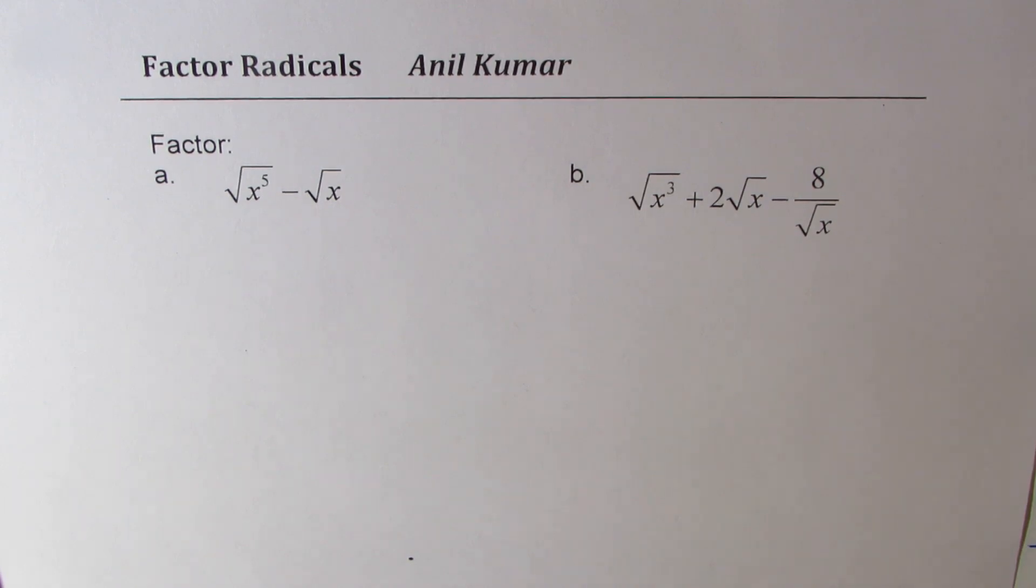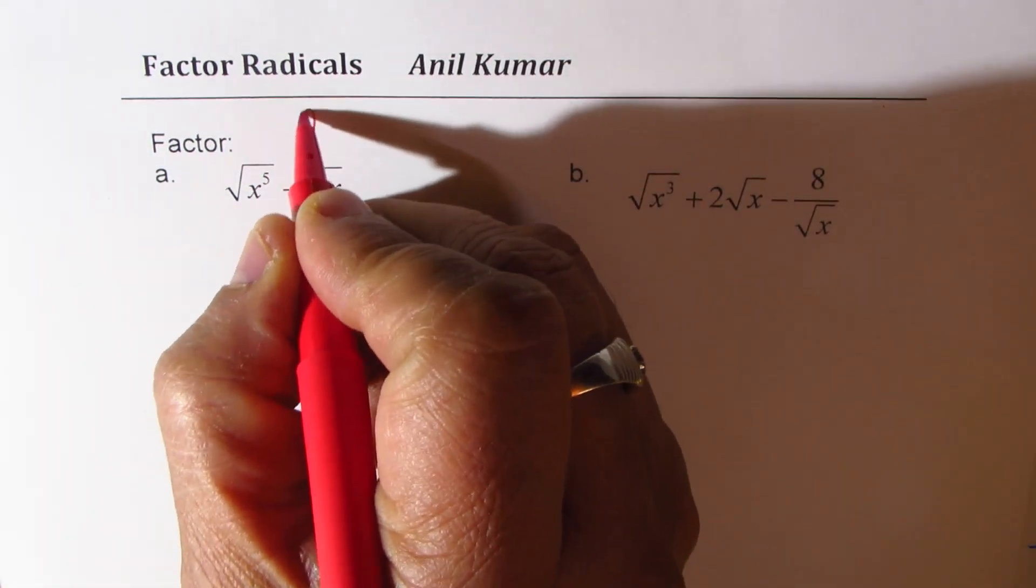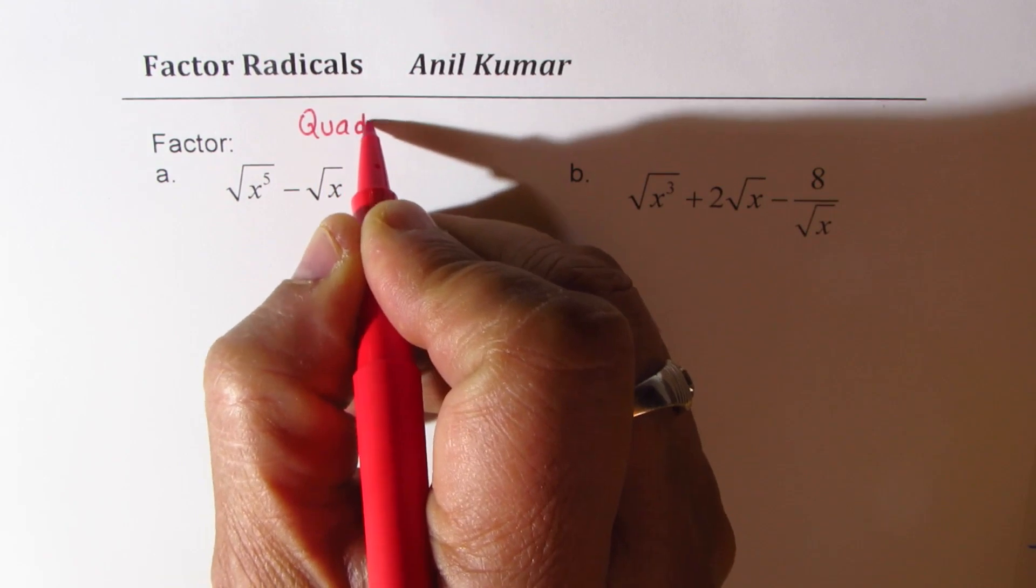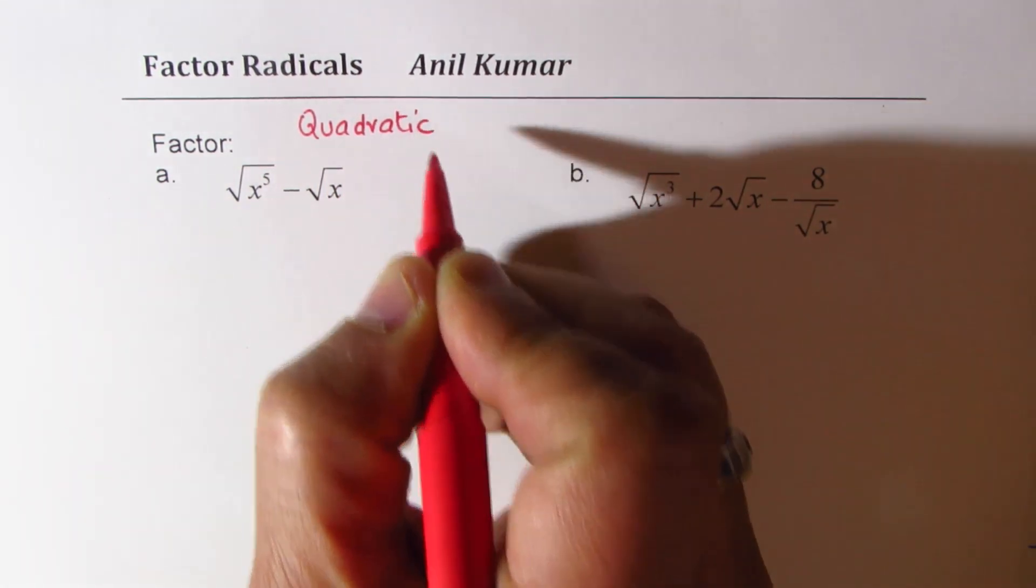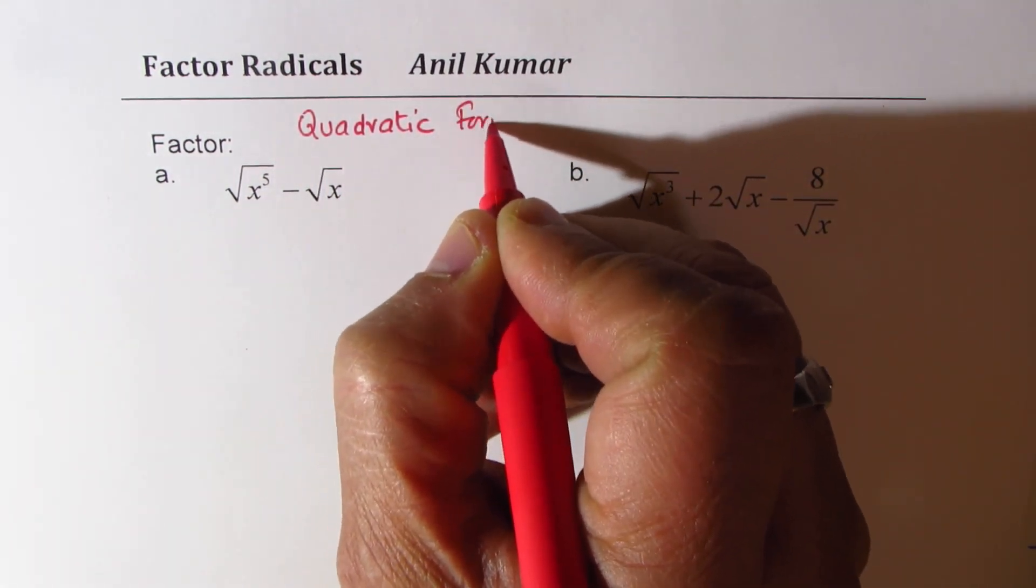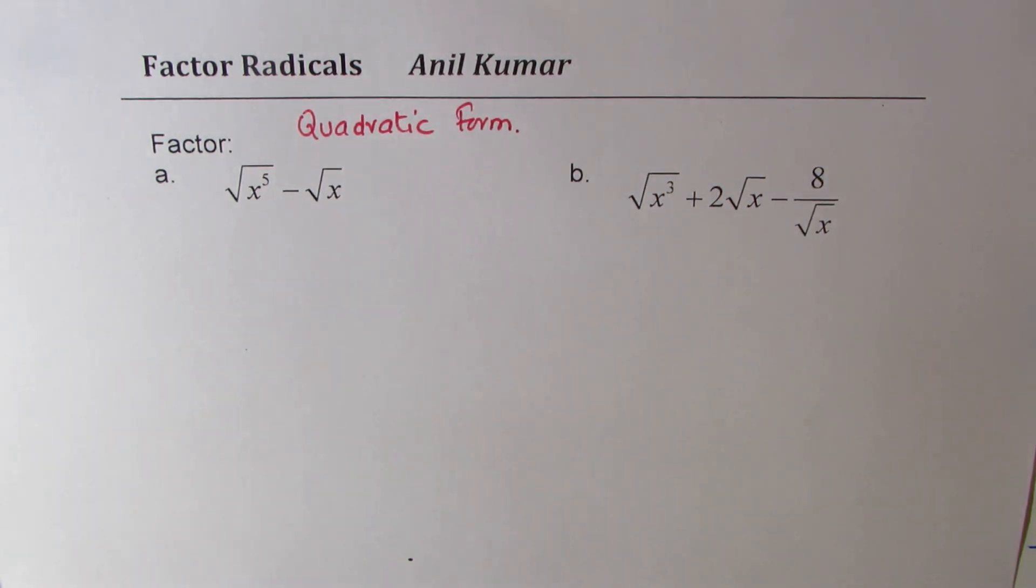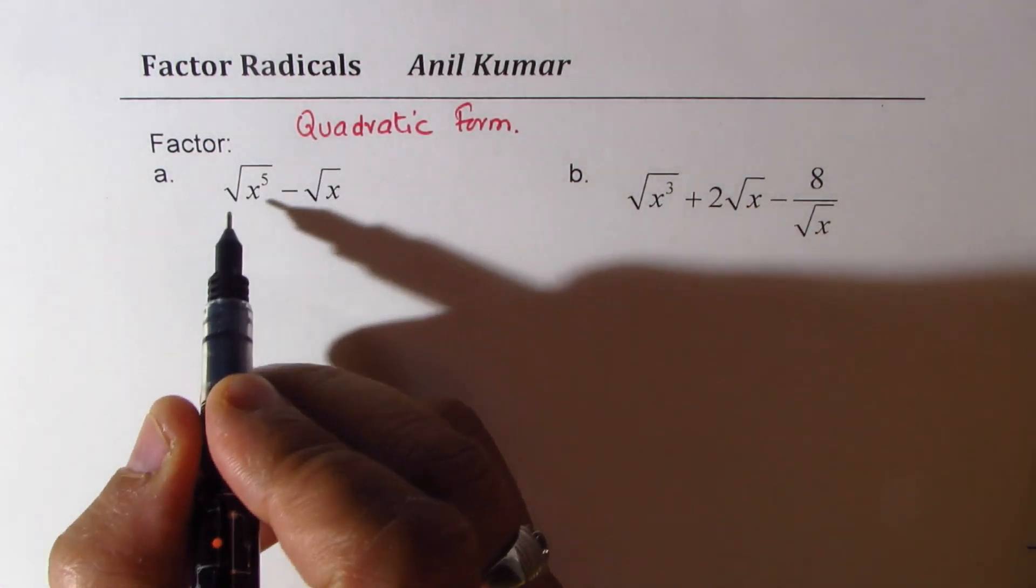Now the idea is to get quadratic form to factor. So that is the key. Let's see how. So let's do part A first.